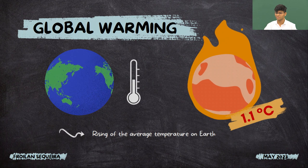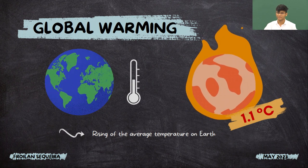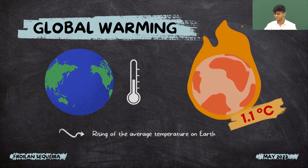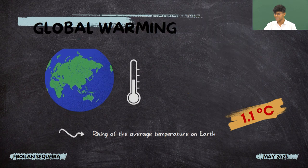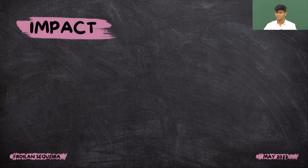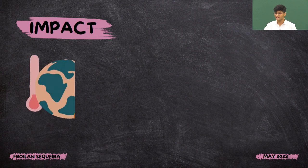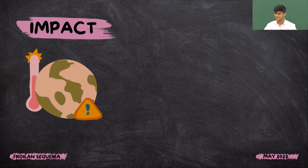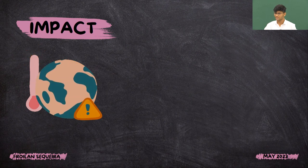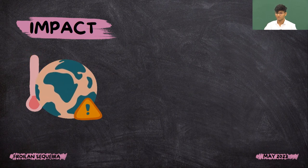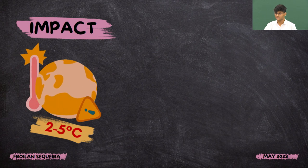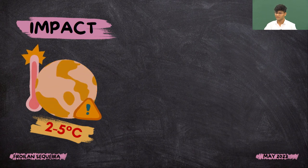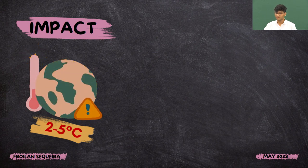This warming will have a big impact on the people and animals of this planet in the near future. It is assumed that by the end of the 21st century, global warming is likely to cause an increase in the Earth's temperature of 2 to 5 degrees Celsius.